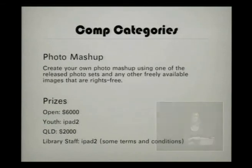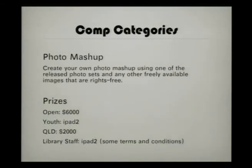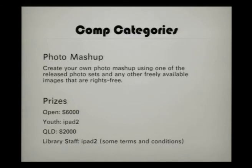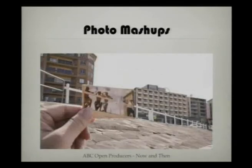There are three different competition categories. The first is a photo mashup, where you can create your own mashup — basically a remix or putting two different things together — using some of the photos that the State Library of Queensland has released. For the open category you might win $6,000, or if you're in the youth category you might win an iPad 2. For the specific Queensland-based one you might win $2,000, and for library staff there's also an iPad 2.